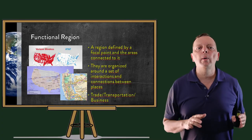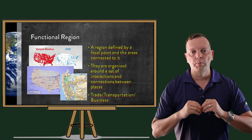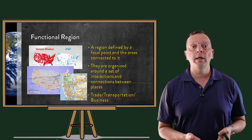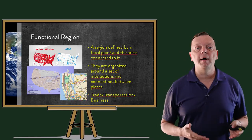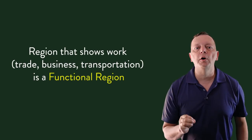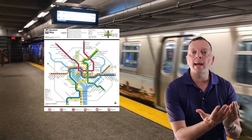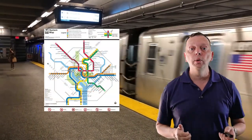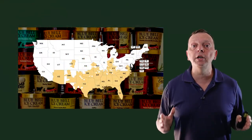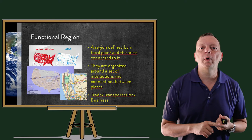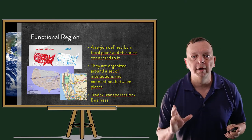Functional regions are those which show how an area is related to a central hub or focal point. Functional means work, so a map that shows how things work is a functional region. We've seen functional regions all around. When you go into AT&T and you see a map that shows where you can have AT&T function, that is a functional region. When you see a map that shows how a subway works, that too is a functional region. And this map showing where you can buy Blue Bell ice cream is a functional region — or what I like to call the region of happiness. So if a map is showing trade, business, or transportation — all things at work — we're talking about a functional region.